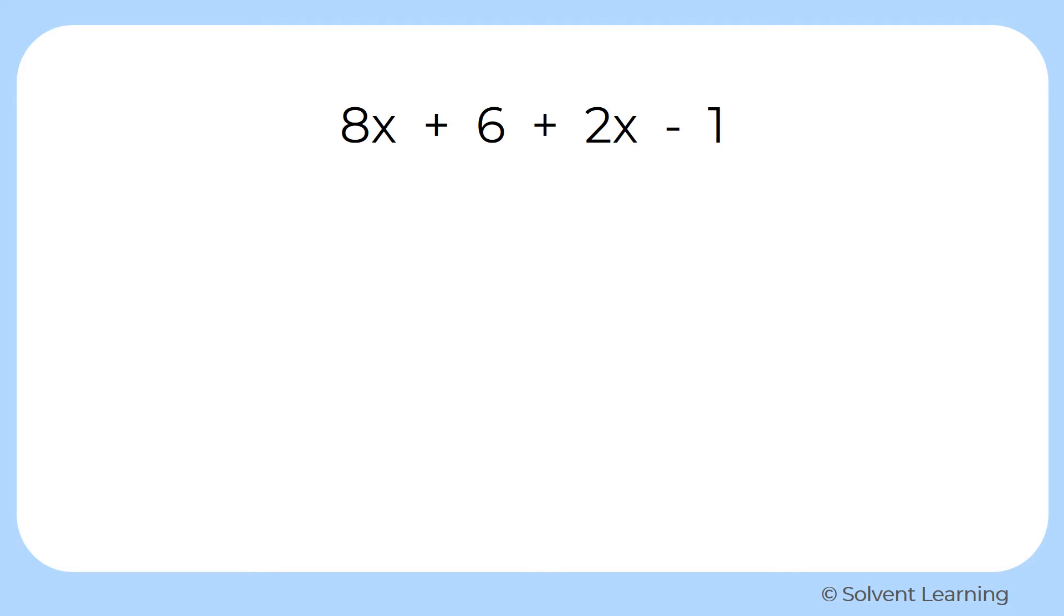So let's see what we have here. We have 8x plus 6 plus 2x minus 1. So we want to see what kind of terms we have here and see if we can find any that are like terms. Remember, terms are all separated by plus or minus sign. So we have four separate terms here.